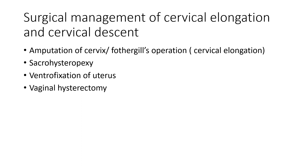If there is vaginal elongation of the cervix, because the vaginal part is elongated, the first treatment option would be amputation of the cervix. This would be the first option for females presenting with vaginal elongation. Other options include sacral cervicopexy and ventral fixation of the uterus — where the uterus is attached to the rectus sheath. For vaginal elongation of the cervix, amputation of the cervix is the choice of treatment.